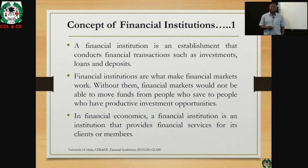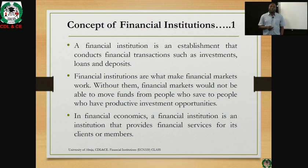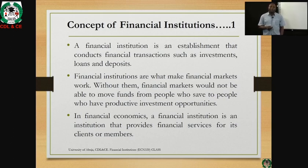Moving on to the concept of financial institution itself: a financial institution is an establishment that conducts financial transactions such as investment, loans, and deposits. These are its critical functions. As we move on in the next session, we'll look at more functions, but briefly, the three major functions are investment, loans, and deposits. Financial institutions are what make financial markets work — they are the big umbrella for financial markets. Without financial institutions, the financial market cannot perform or function.